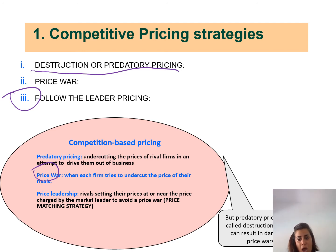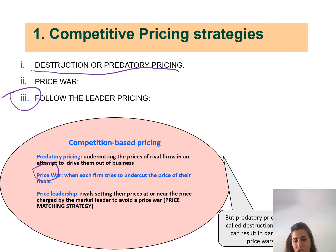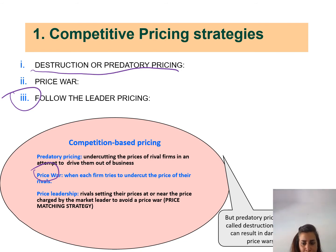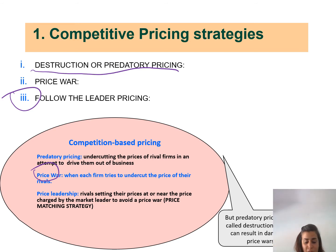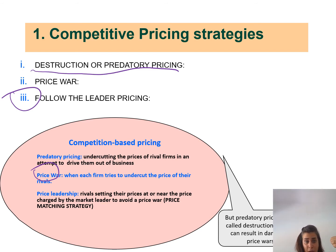For example, with Pepsi and price leadership — whatever price they set for their soft drink, Coca-Cola and other soft drink companies imitate them and follow the pricing strategies that they are using. So we are done with the first feature of a competitive market.